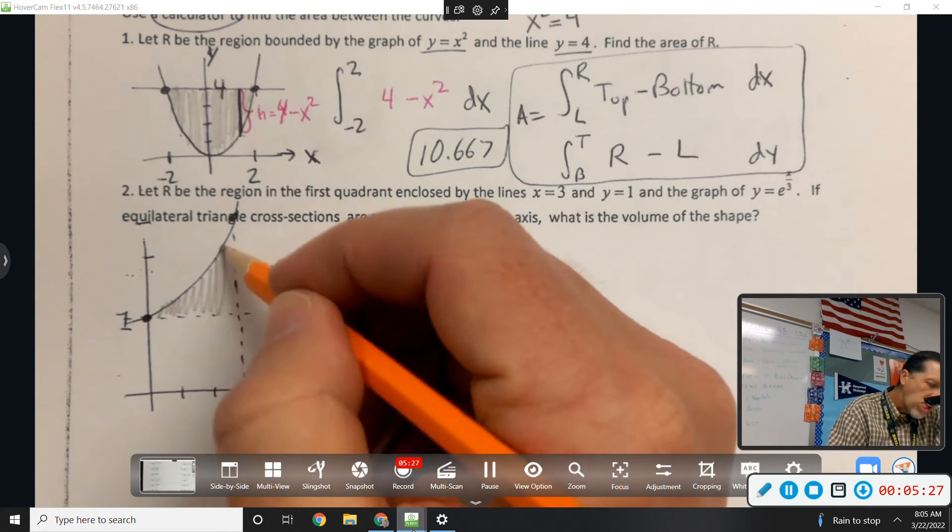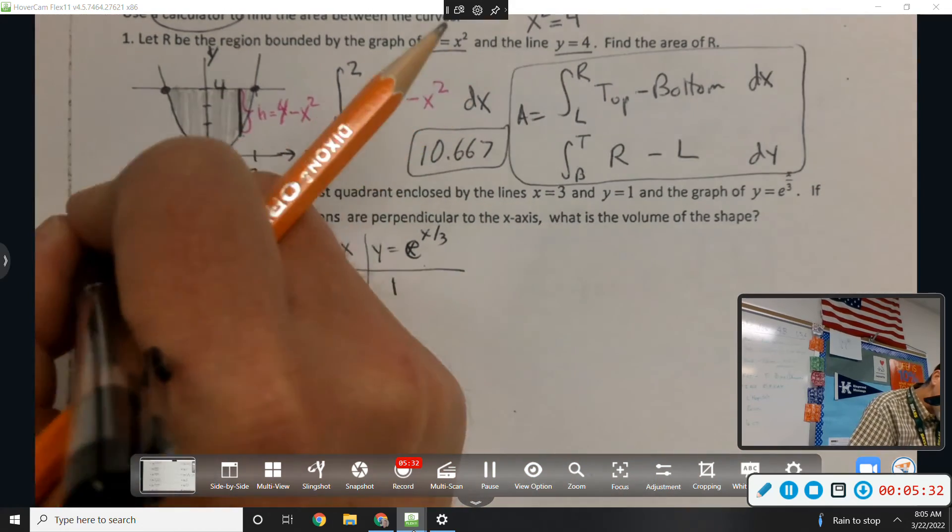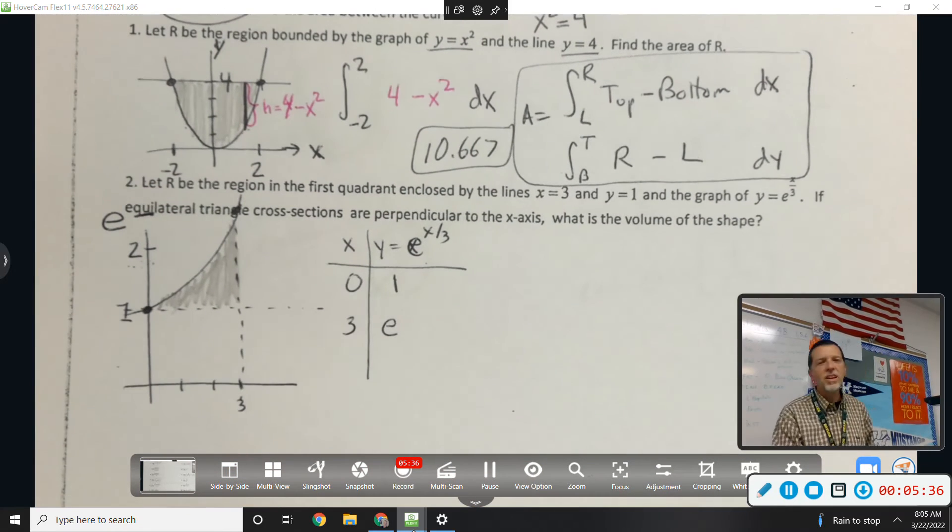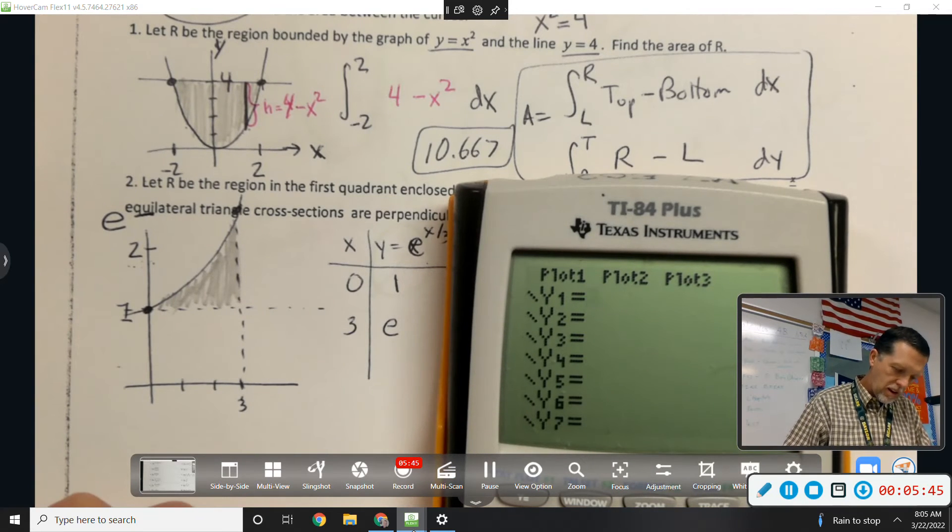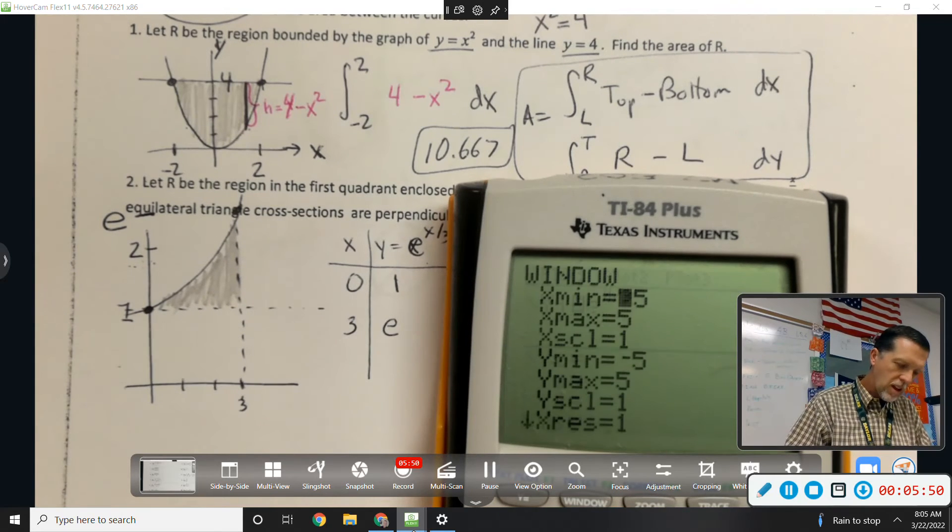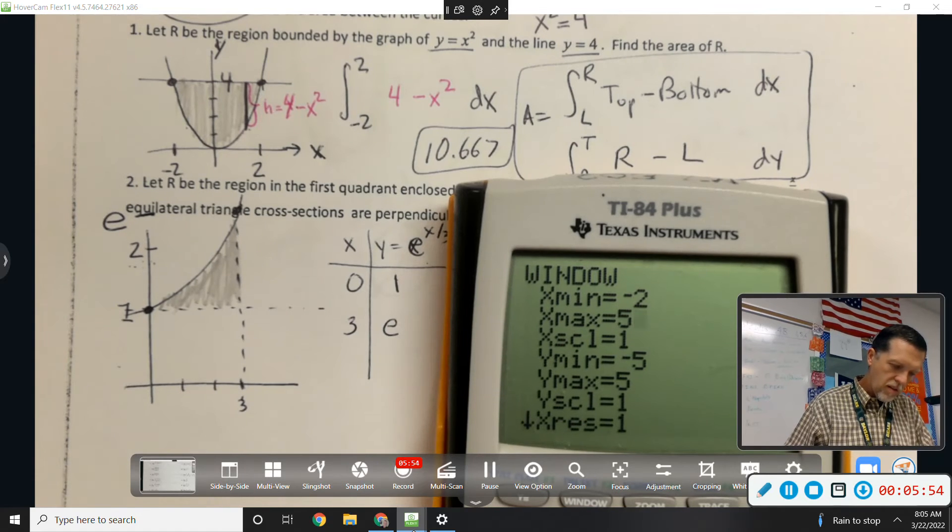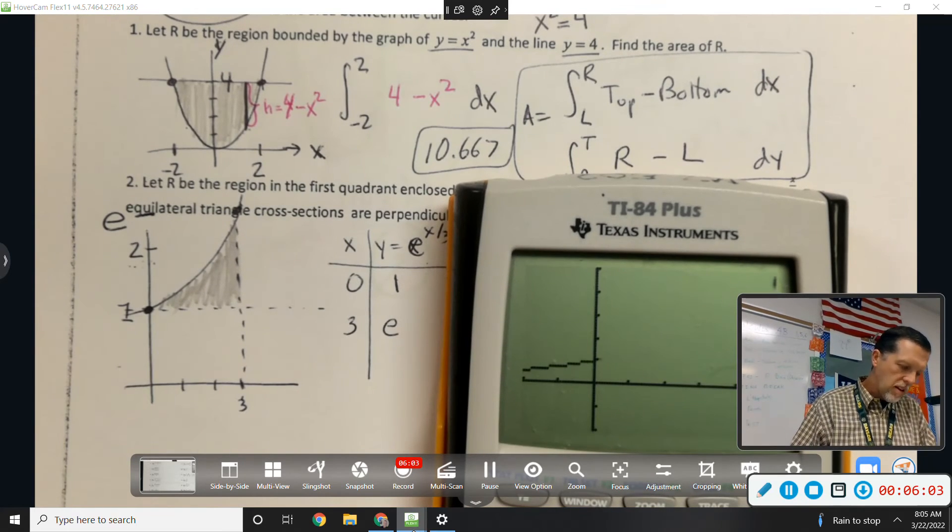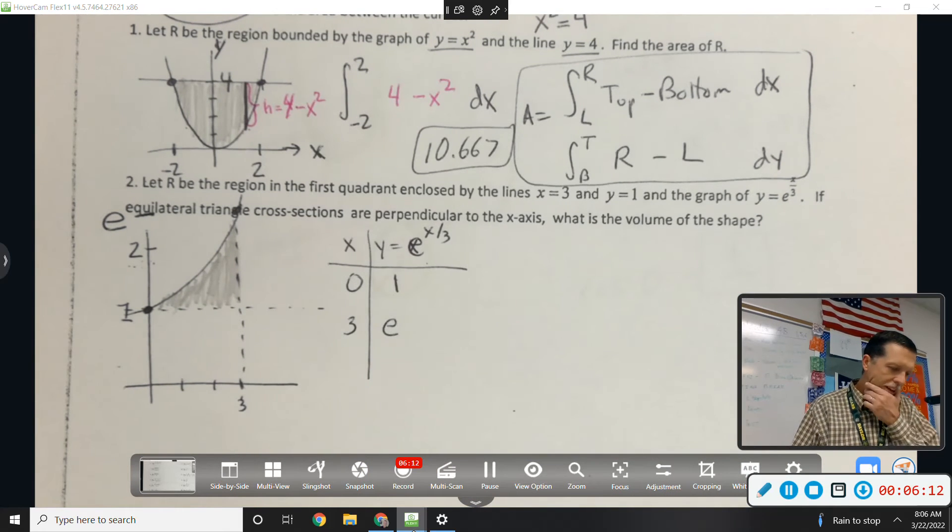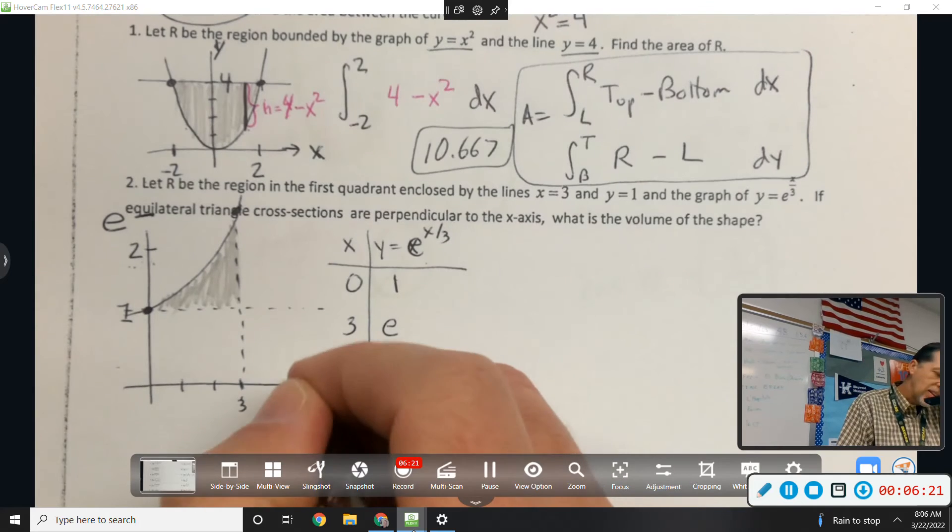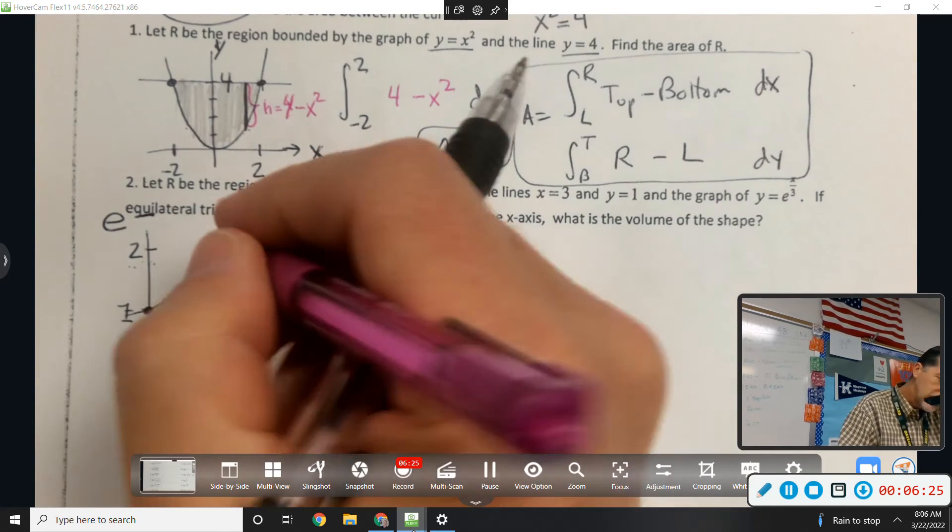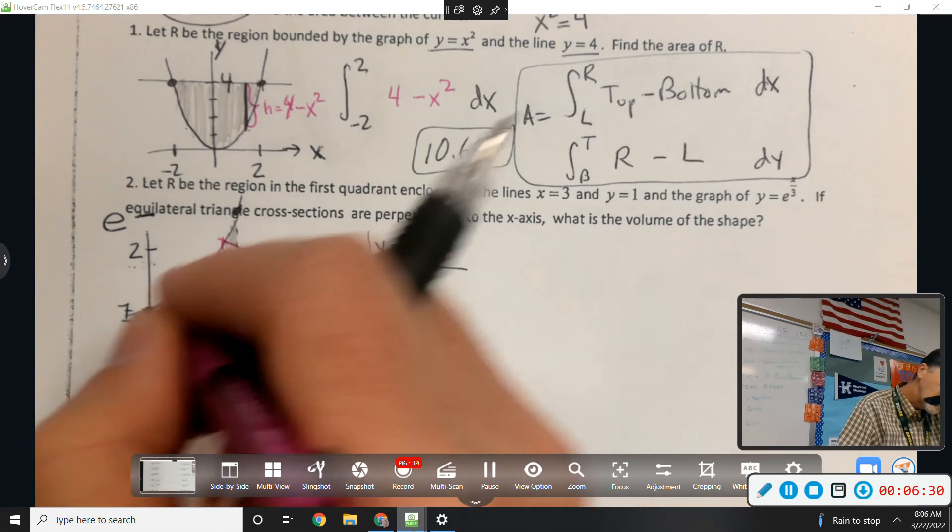So that's up here. So my base area is right there. And that top number is e, which is 2.7-ish. Now, you have a calculator, so if you weren't sure of any of those, especially that e to the x over 3. Let's see if that looks right. Yeah. Okay. Next. If the equilateral triangle cross sections are perpendicular to the x-axis.